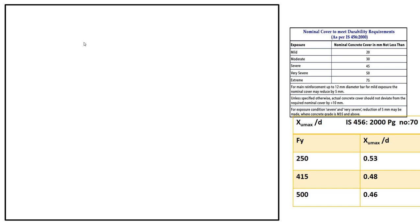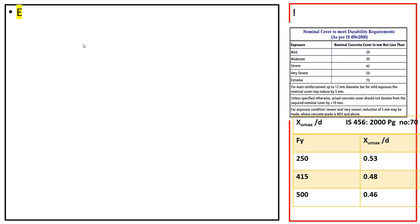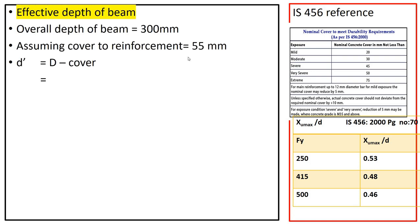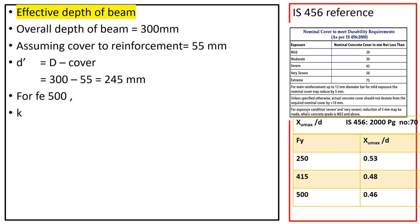Let us calculate the effective depth first. The overall depth is 300. Let us assume the cover is 55, so the effective depth equals overall depth minus cover — effective depth is 245 mm. For Fe500 steel, xu,max/d is 0.46.